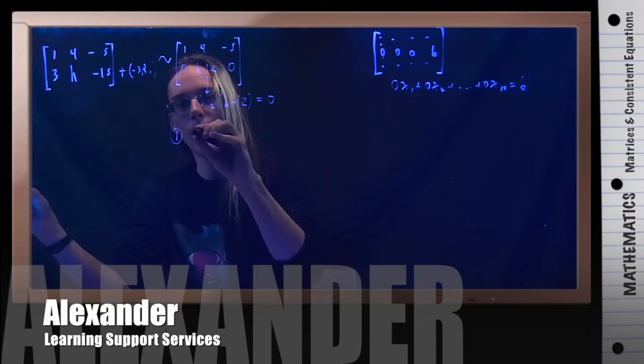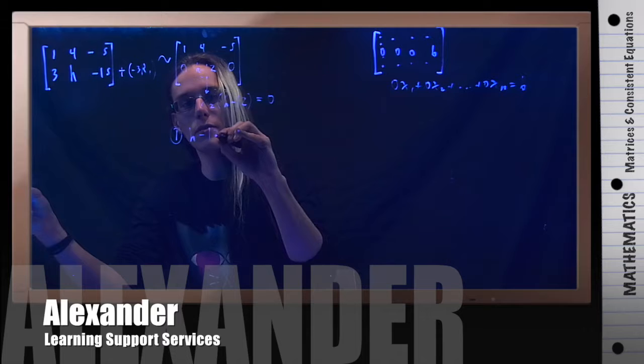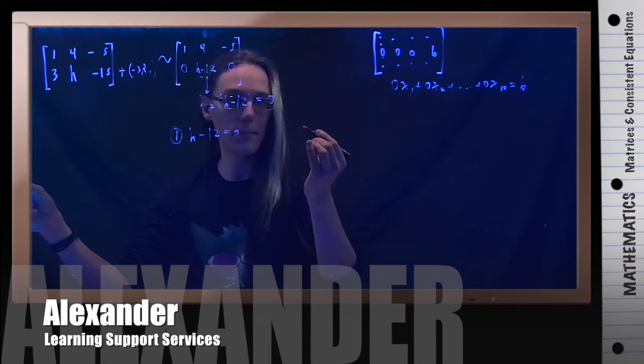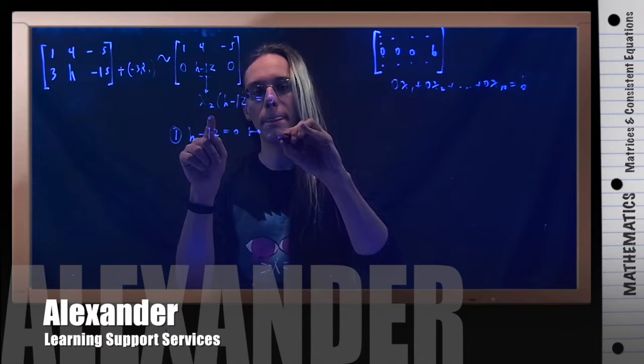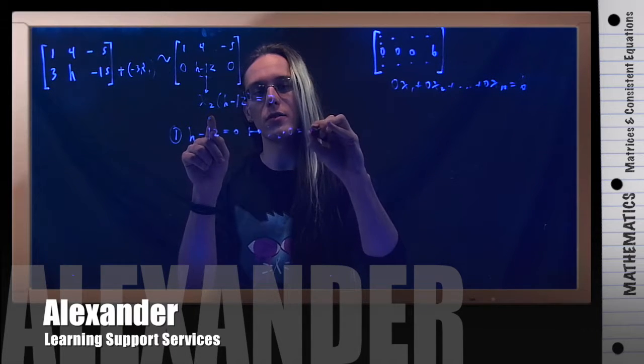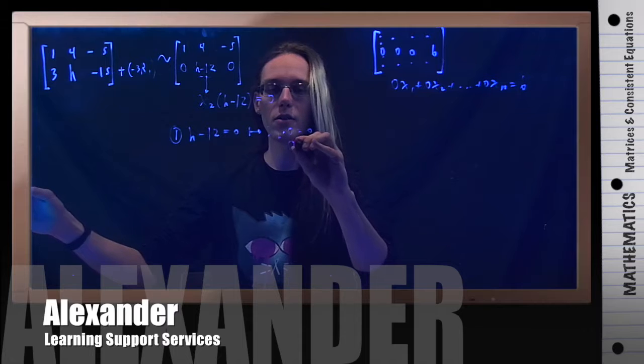Case 1, h minus 12 could equal 0. Well, what happens then? If h minus 12 equals 0, then this is x2 times 0 equals 0, which means I have the equation 0 equals 0.